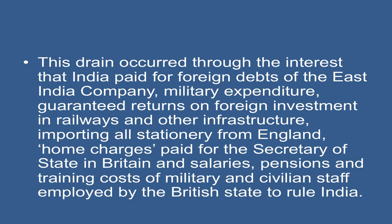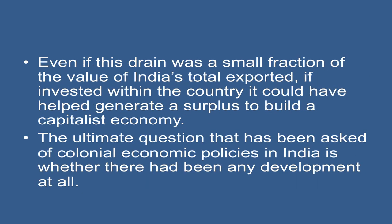This drain occurred through the interest that India paid for foreign debts of the East India Company, military expenditure, guaranteed returns on foreign investment in railways and other infrastructure, importing all stationery from England, home charges paid for the Secretary of State in Britain, and salaries, pensions, and trading costs of military and civilian staff employed by the British state to rule India. Even if this drain was a small fraction of the value of India's total exports, if invested within the country, it could have helped generate a surplus to build a capitalist economy.